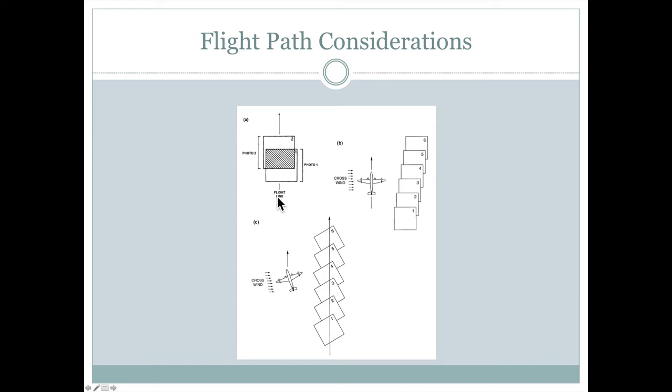So let's start at the top here on the top left. This is a simple example here where the flight line is straight. One aerial photo is taken here. The second aerial photo is taken here. All of this stippled area would be overlap and allow stereoscopic viewing and orthorectification.